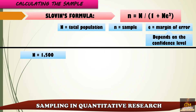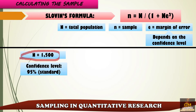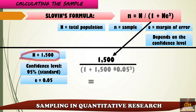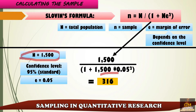For example, with a total population of 1,500 individuals and a confidence level of 95% — which is the standard — our margin of error would then be 0.05. Applying the formula, we have 1,500 over 1 plus 1,500 times 0.05 squared, giving us 315.78. Since we cannot consider decimals in our population, we round it off to 316. Thus, for a population of 1,500 individuals, the appropriate representative sample for a 95% confidence level would be 316 individuals.